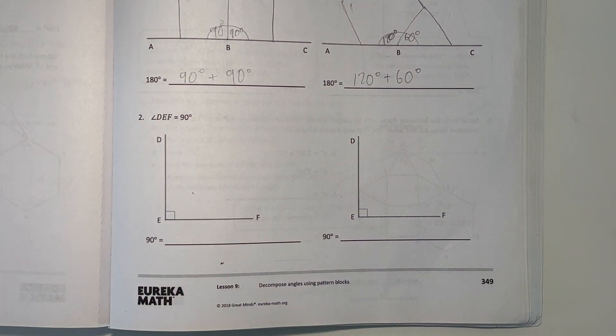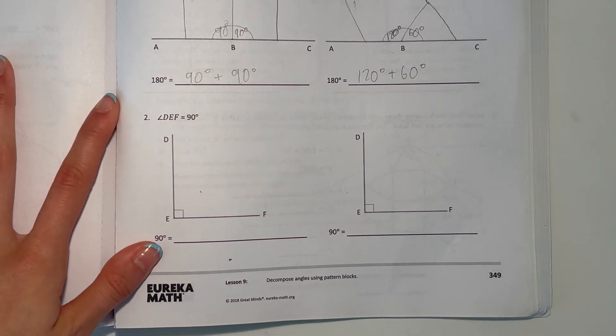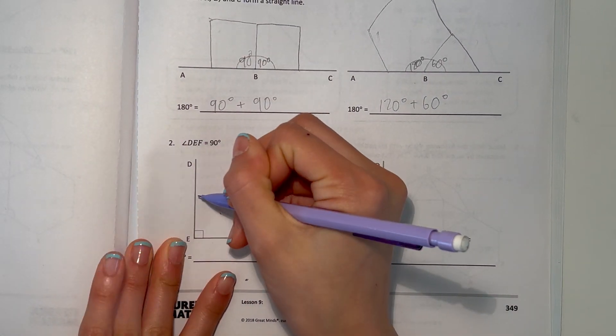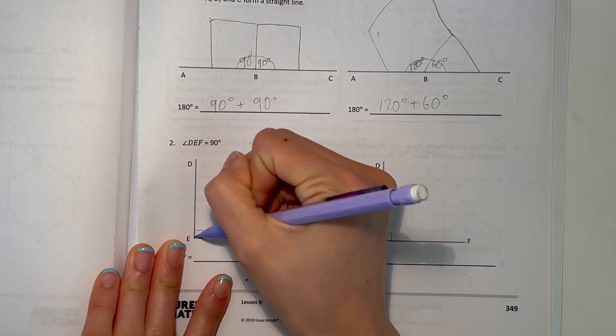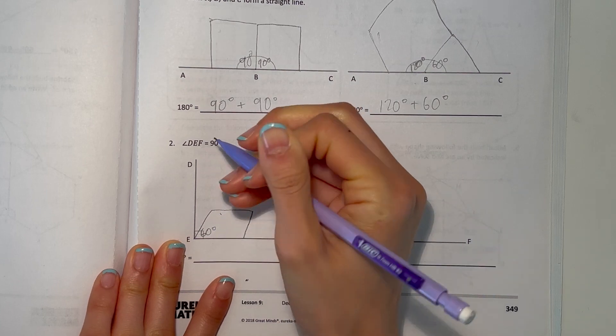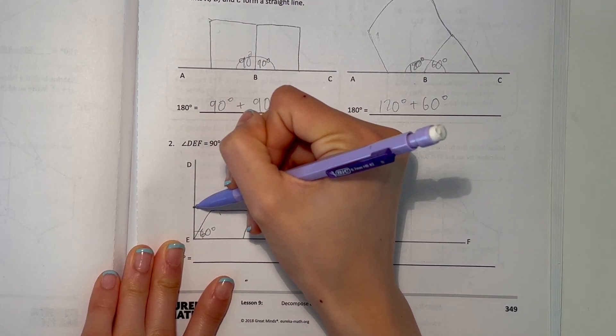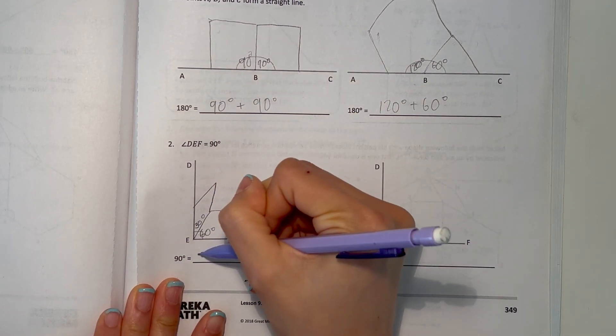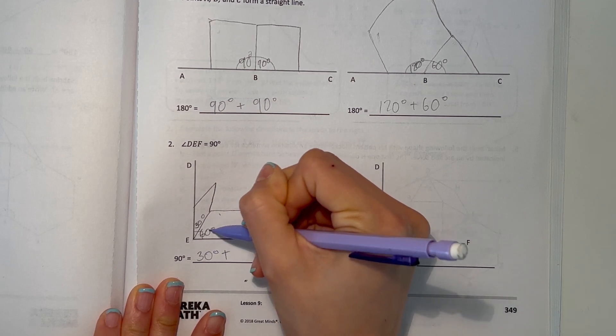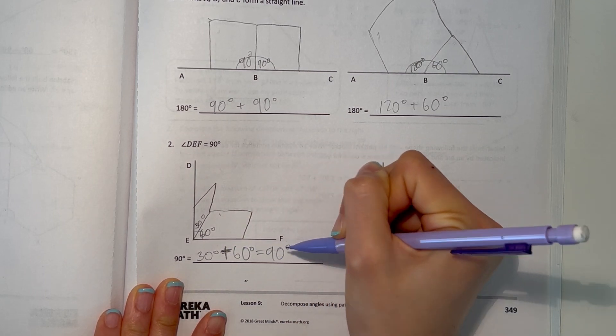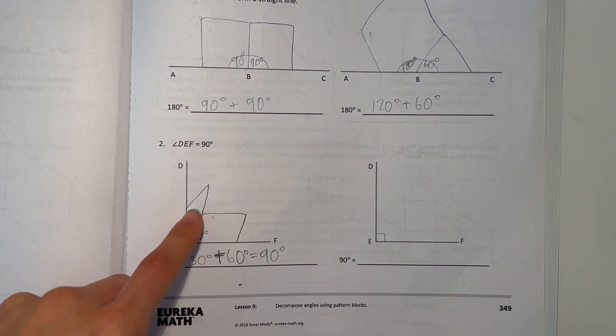Now number two. Angle DEF equals 90 degrees. So we want to make something that makes 90 degrees. We can start off with a rhombus to show 60. This much is 60 degrees. And now this little gap here, we can fill it in with 30 degrees. So this would be 30 degrees. Now, 30 degrees plus 60 degrees equals 90 degrees. So this whole thing is 90 degrees.